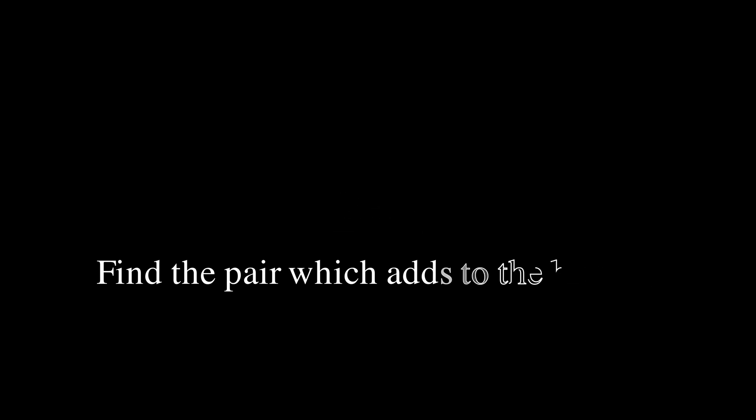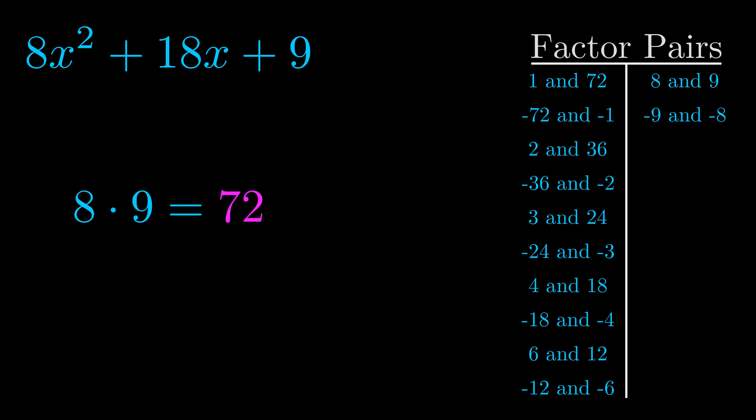The b value is the coefficient on the x term. That's the middle term, the one that we haven't done anything with yet. And really this is the only factor pair that we need.